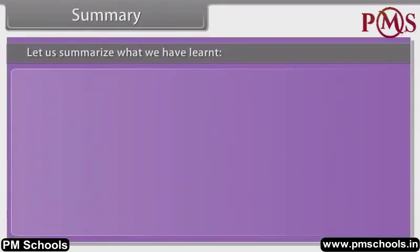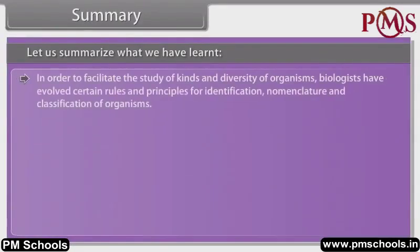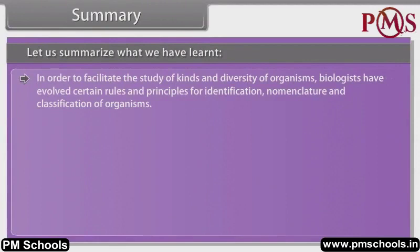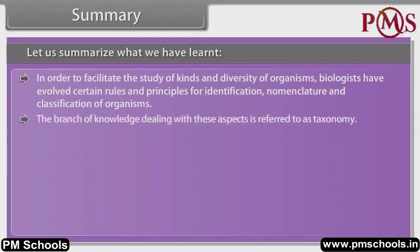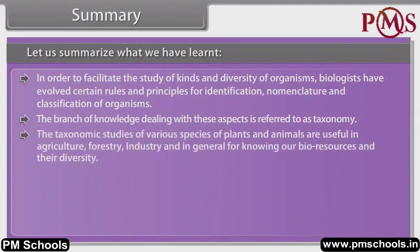In order to facilitate the study of kinds and diversity of organisms, biologists have evolved certain rules and principles for identification, nomenclature and classification of organisms. The branch of knowledge dealing with these aspects is referred to as taxonomy. The taxonomic studies of various species of plants and animals are useful in agriculture, forestry, industry and in general for knowing our bio-resources and their diversity.